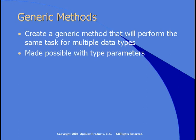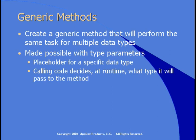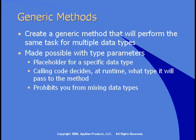You can do this because of a concept called type parameters. A type parameter is a placeholder for a specific data type, and the calling code decides at runtime what type it'll pass to the method. You define a method at design time as being able to take multiple data types, and then at runtime you decide what type you'll pass each time you call the method. At runtime you can't mix and match data types — you can't pass two different data types to a method; you're limited to one at a time.